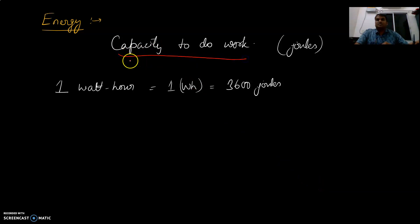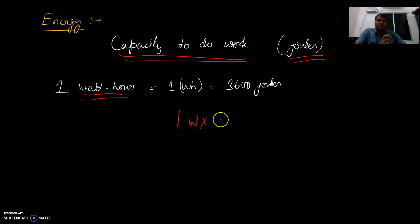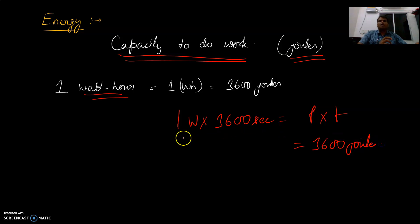Energy is the capacity to do work, given in joules. Energy can also be represented in watt-hours — 1 watt-hour is 1 watt for 1 hour, and 1 hour is 3600 seconds. So total energy is power × time in seconds, which equals 3600 joules per watt-hour. Power is the rate of change of energy, so energy equals power × time.